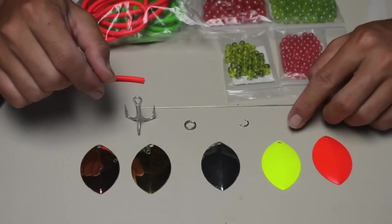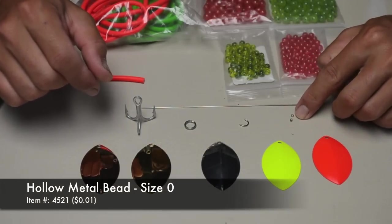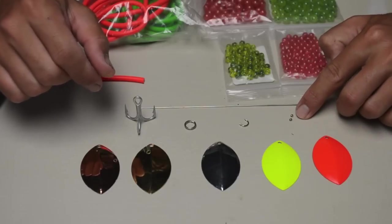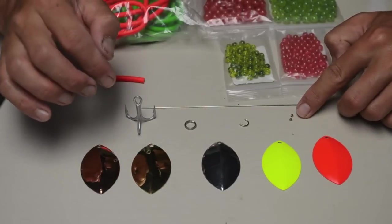And then below that I have two of these hollow, small hollow metal beads, you can barely see them on here. Those will act as the bearing for which the clevis will spin on.